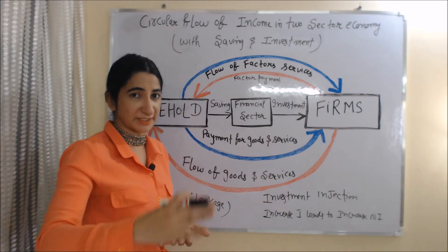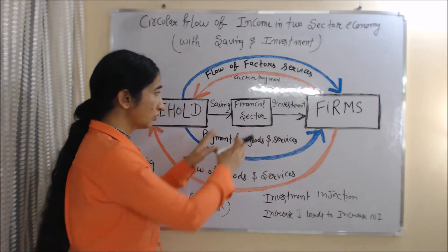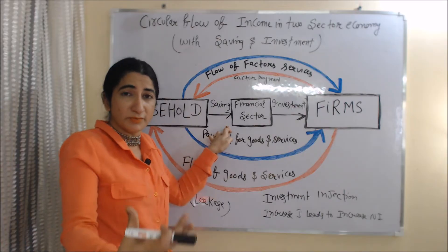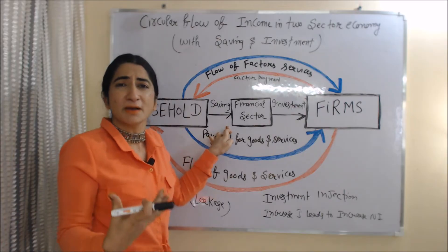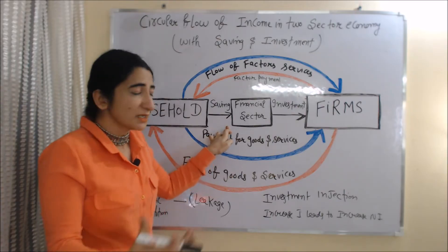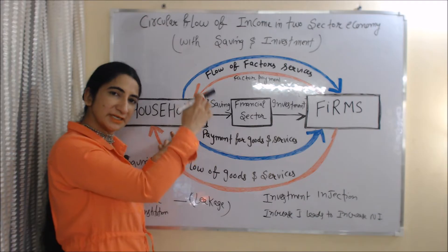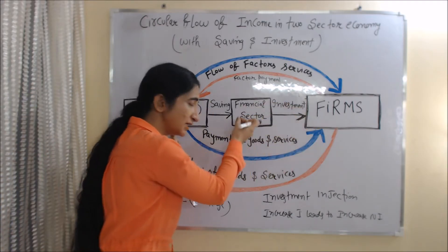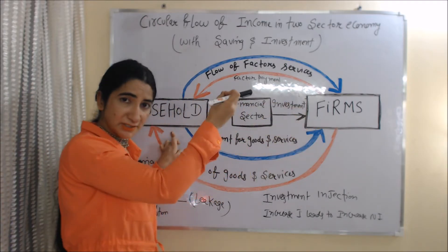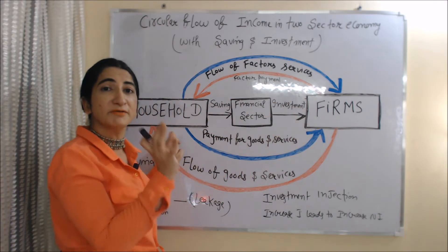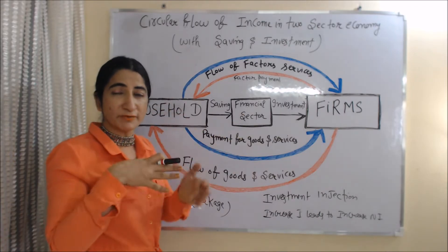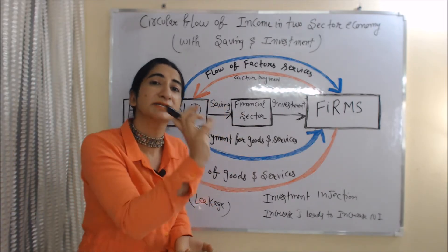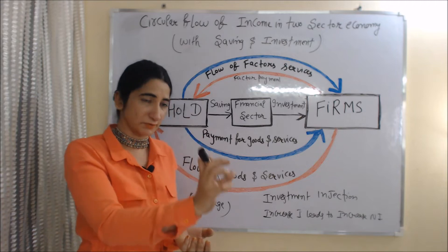Now we will see the circular flow of income in a two sector economy with saving and investment. There are many financial institutions in the economy — for example, banks — where the household sector deposits their savings, and business firms borrow this money from financial institutions for investment purposes. So saving of the household sector generates investment in the economy.